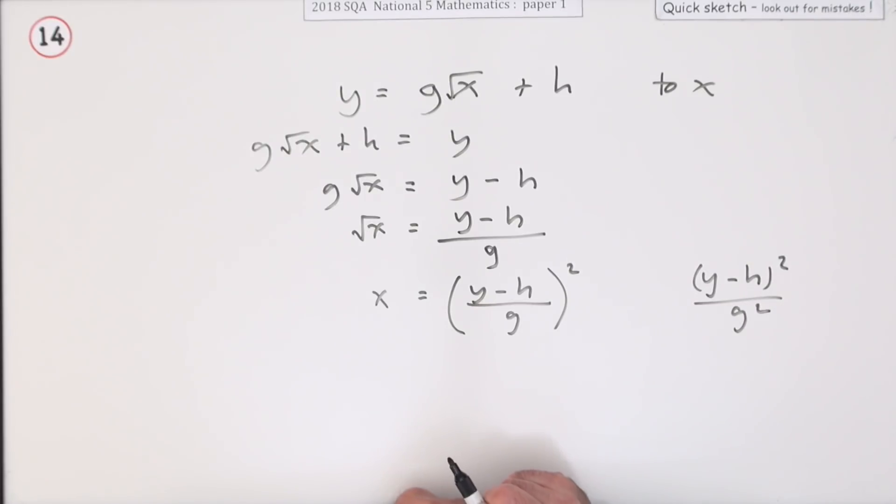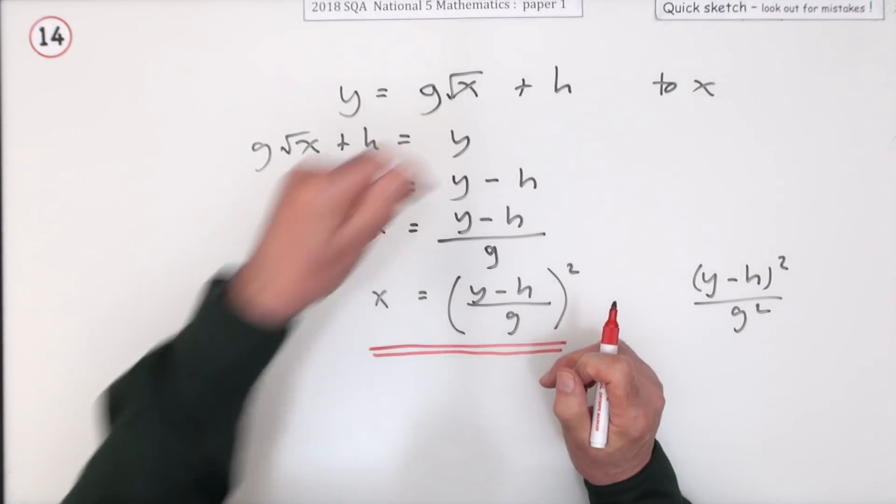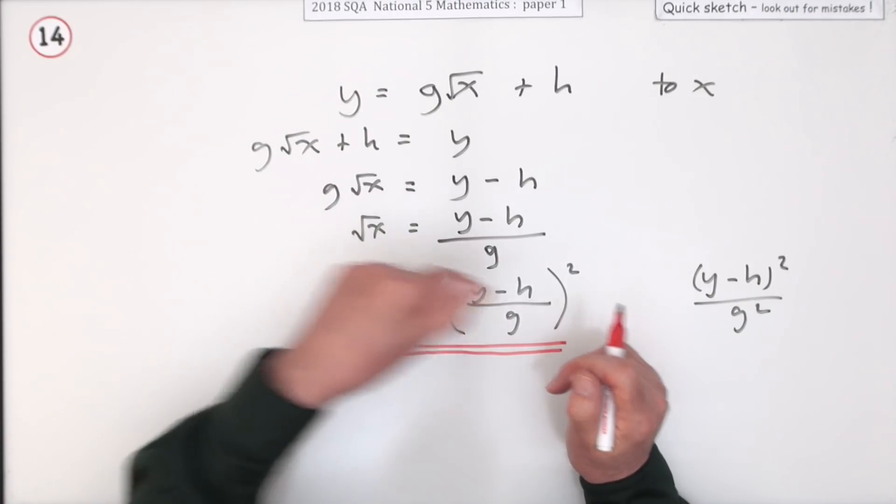The three marks would probably be dealing with the h, dealing with the g, and dealing with the square root.